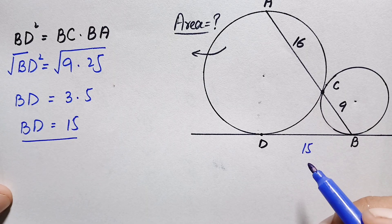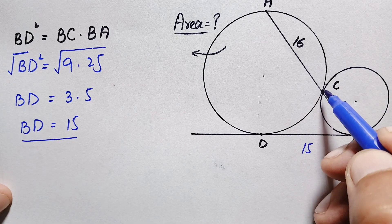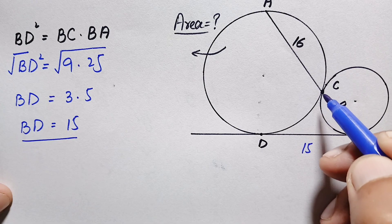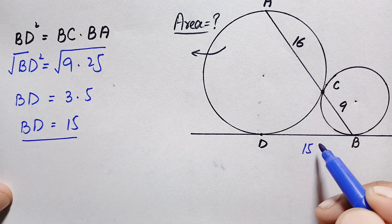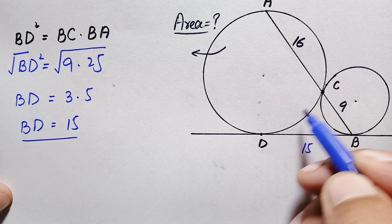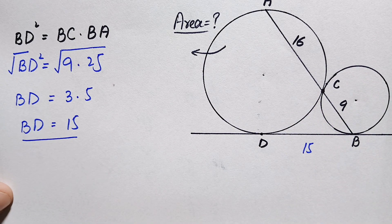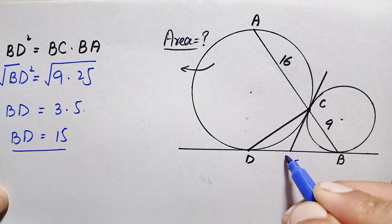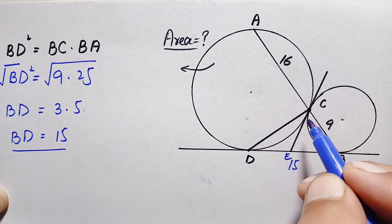Next, we will draw a common tangent to these two circles at point C such that the tangent meets the line segment BD. We will also connect D with point C. Let us call the intersection point E.